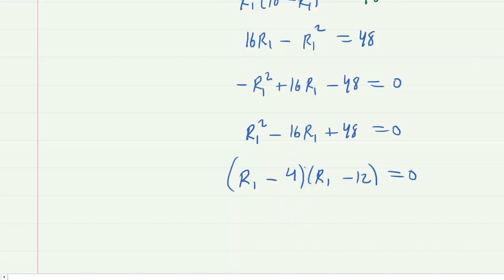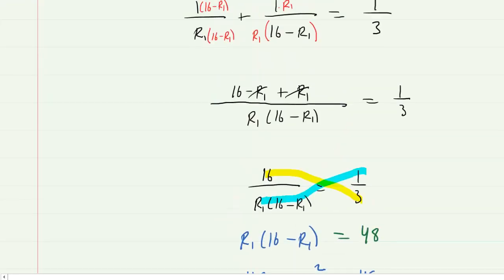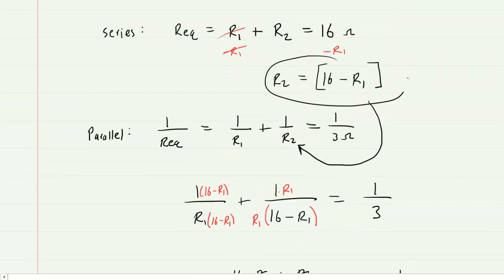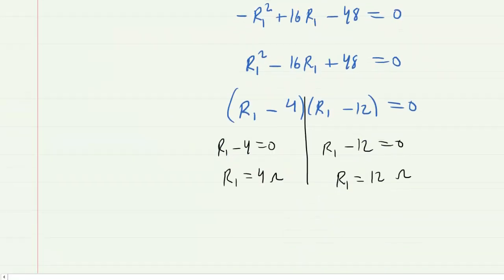So now we can basically just set each factor equal to 0. R1 minus 4 equals 0. R1 minus 12 equals 0. In the first case we get R1 equals 4 ohms. And in the second case we get R1 equals 12 ohms. Now let's not forget that R2 was 16 minus R1.